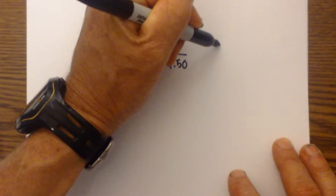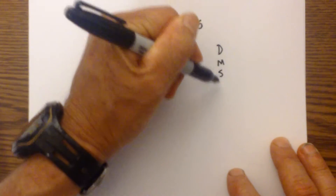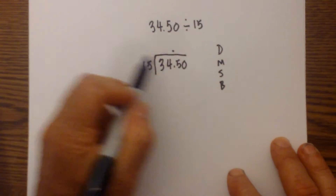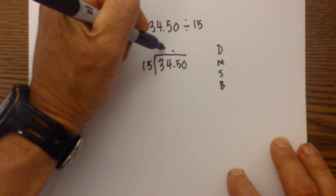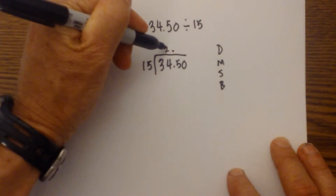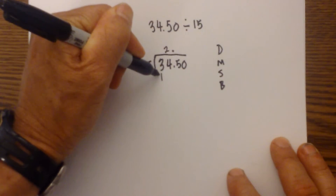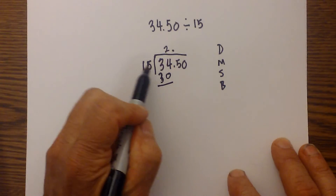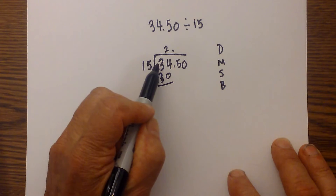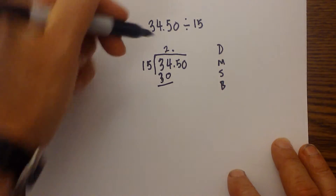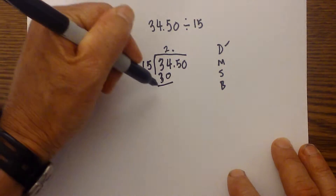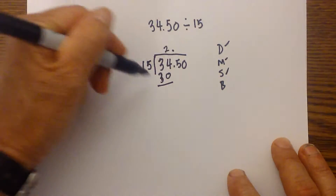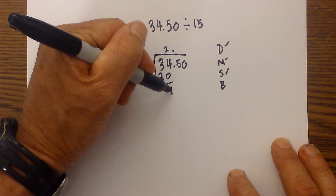Remember we are going to use dad, mom, sister, brother. So we are going to divide first. 15 cannot divide into 3 because 3 is less than 15. So 34 divided by 15 goes 2 times. Now we multiply: 2 times 15 is 30. Next we subtract: 34 minus 30 is 4.